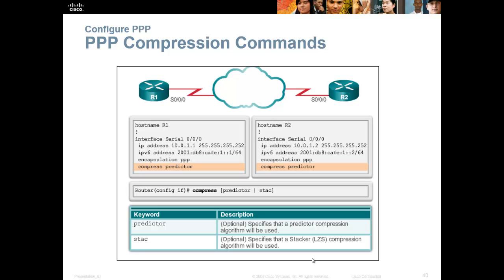If you want compression on, you have to do this on both ends: 'compress predictor' or 'compress stac'. Nine times out of ten, you don't want to compress your data because it slows things down — your router has to do extra work. Typically, if you're only dealing with a T1, you don't have a very robust router. But if you're dealing with nine T1s, maybe you do have a robust router and compression makes sense.